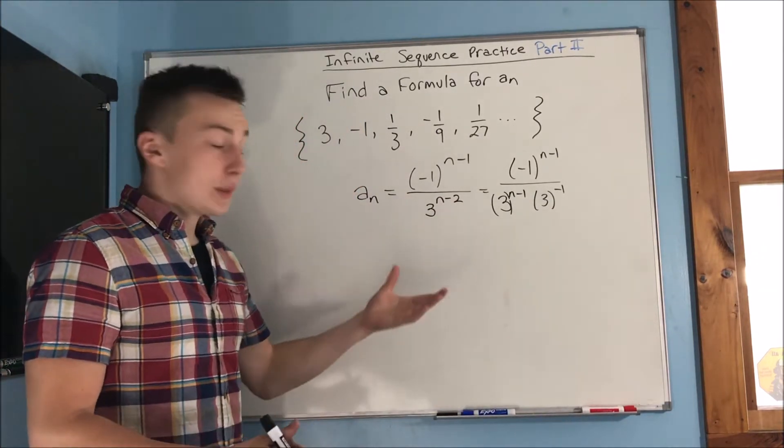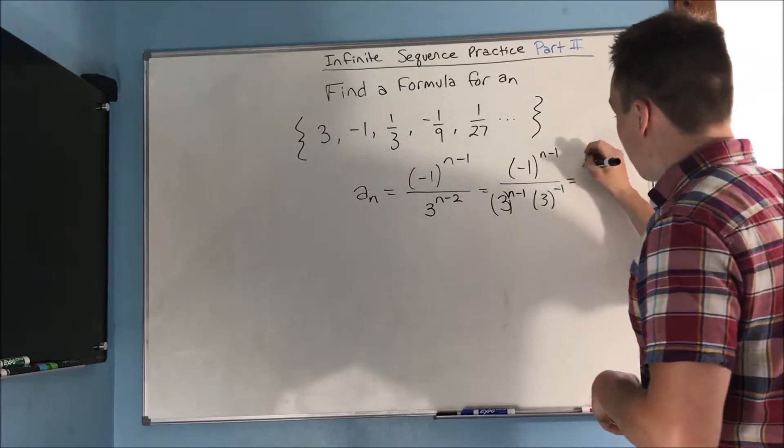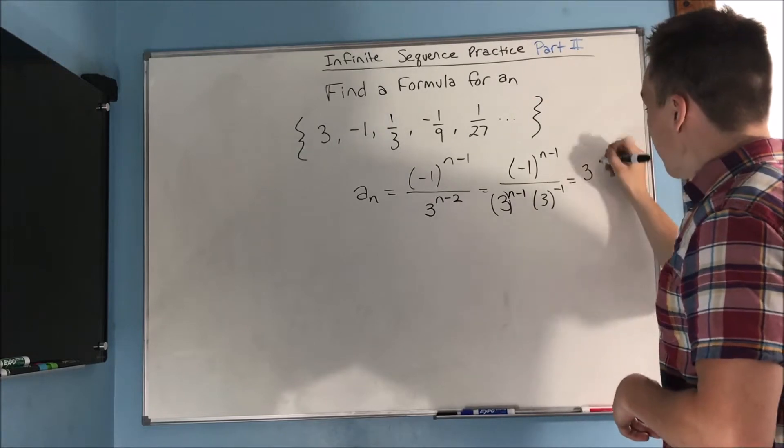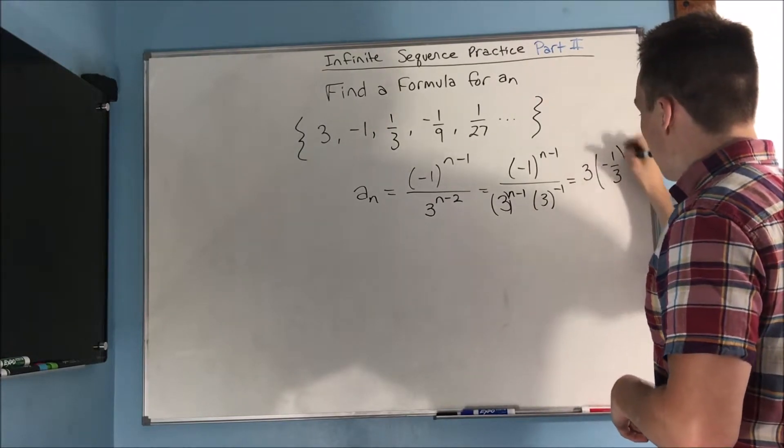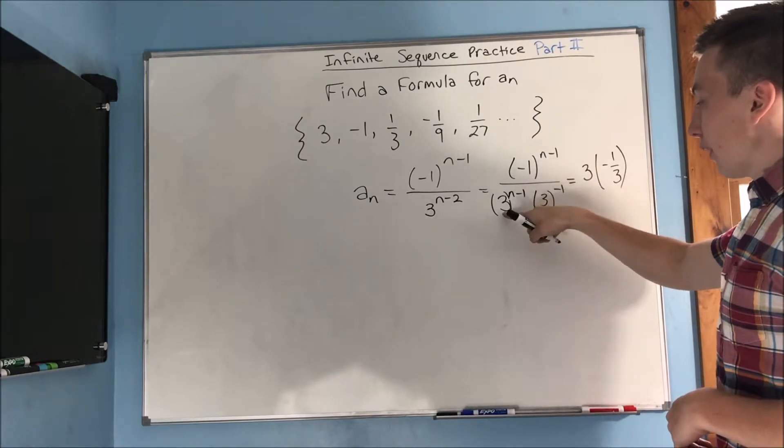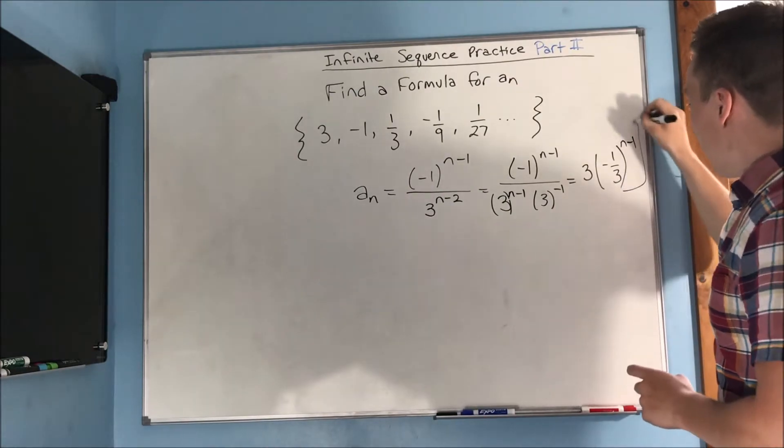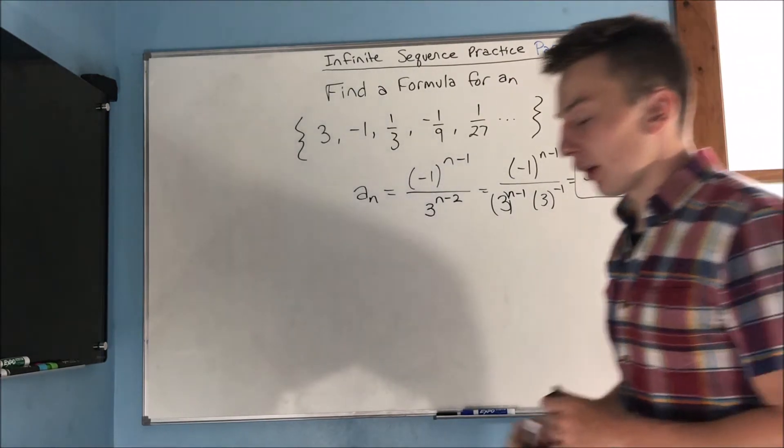What does this allow us to do? Well, we know that three to the negative one in the denominator is just going to be a three on top, and then we just have a negative one-third here, because we're just going to combine this negative one and the three because they're both to the n minus one power. So we just put this to the n minus one power and there you go, we have our answer.